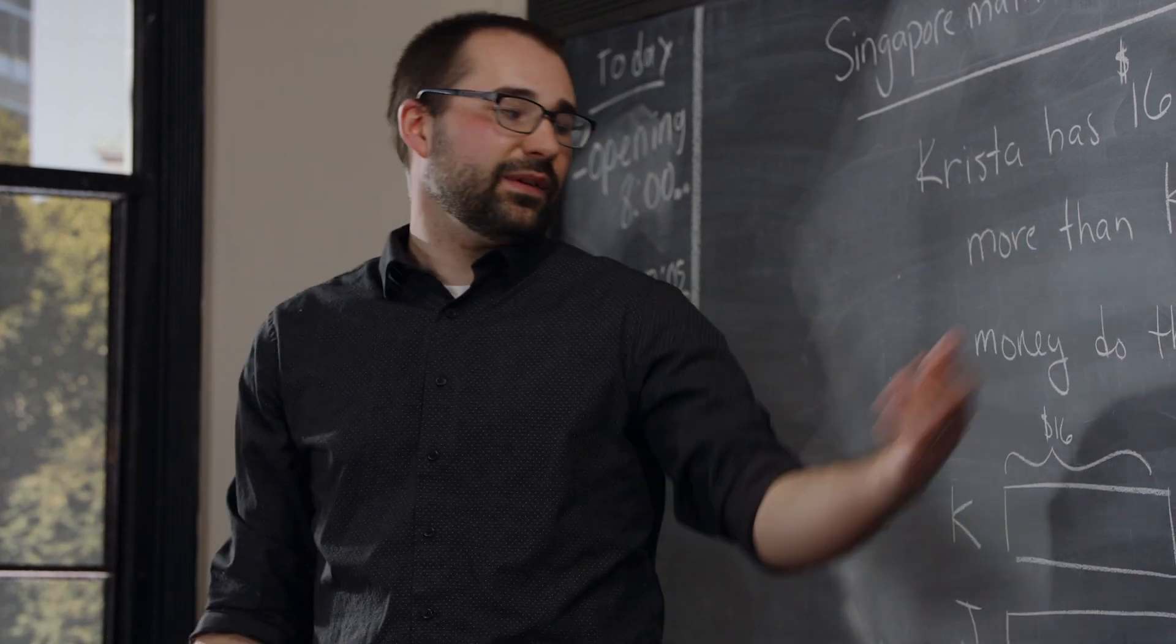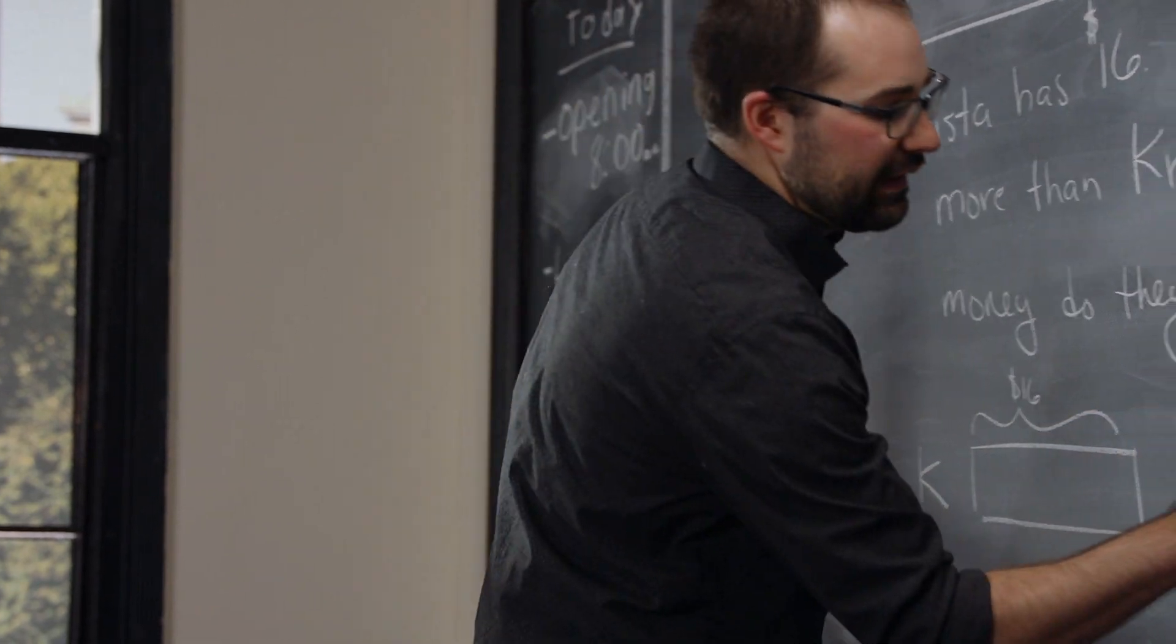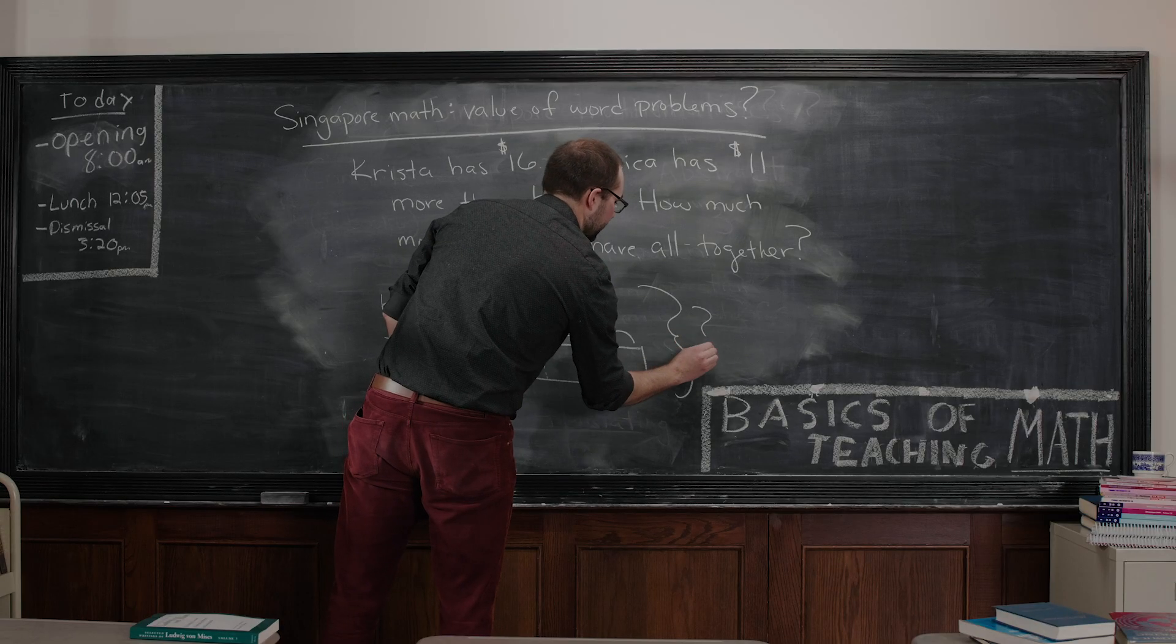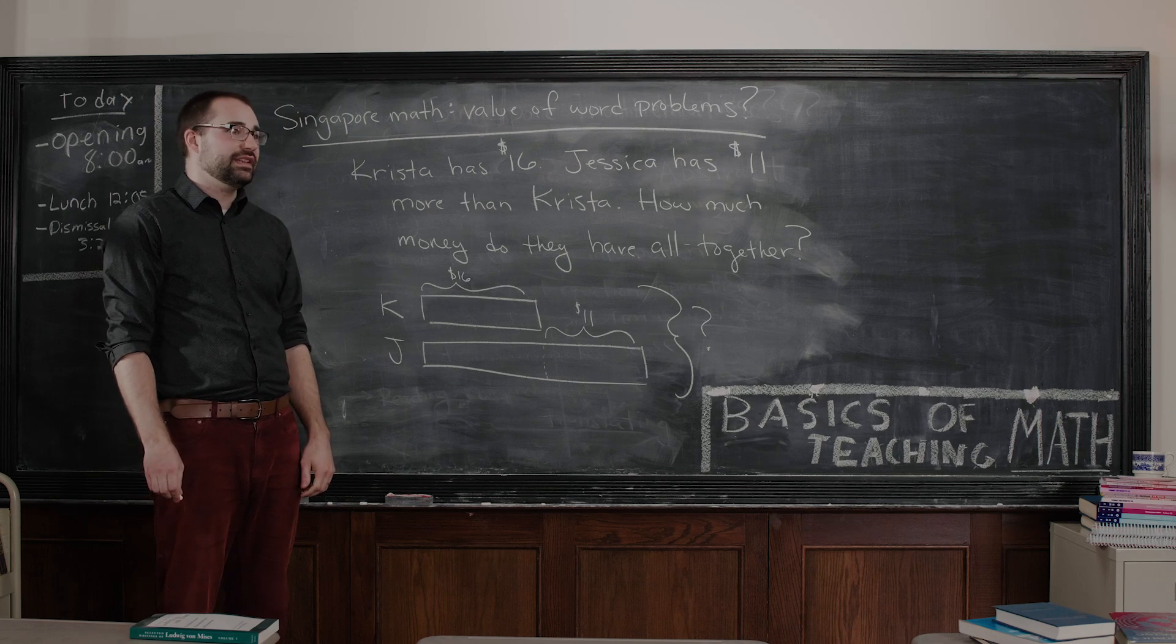Sometimes you can even put a little line there to show that Jessica has $11. Then to finish this off, how much money do they have altogether? We finish off every bar model by thinking about a question mark, and the question mark here is going to belong over here because I want to know how much money they have all together.